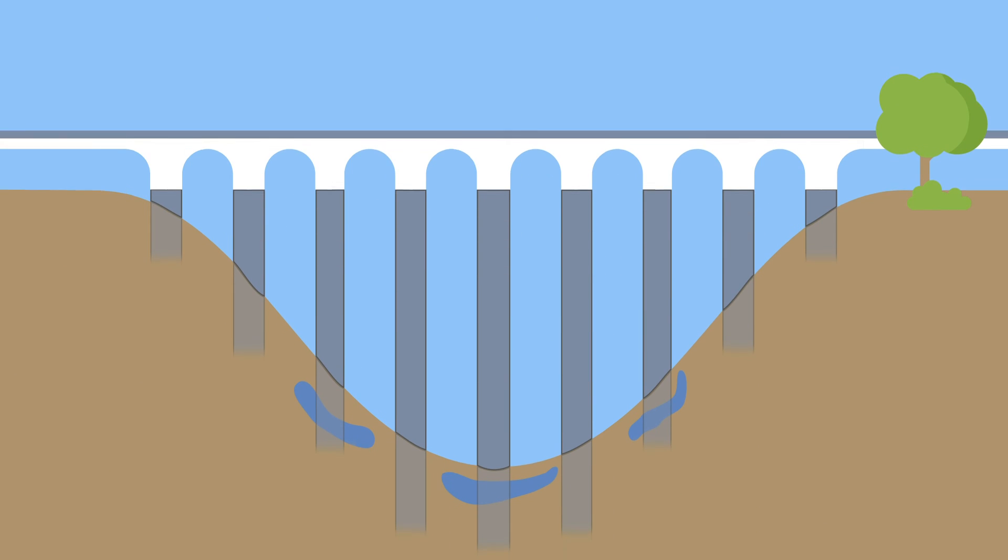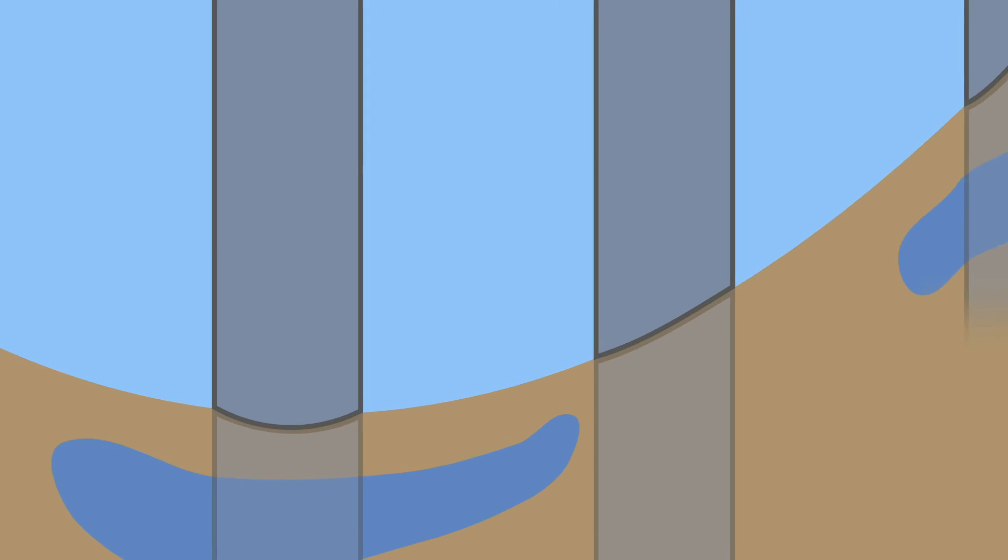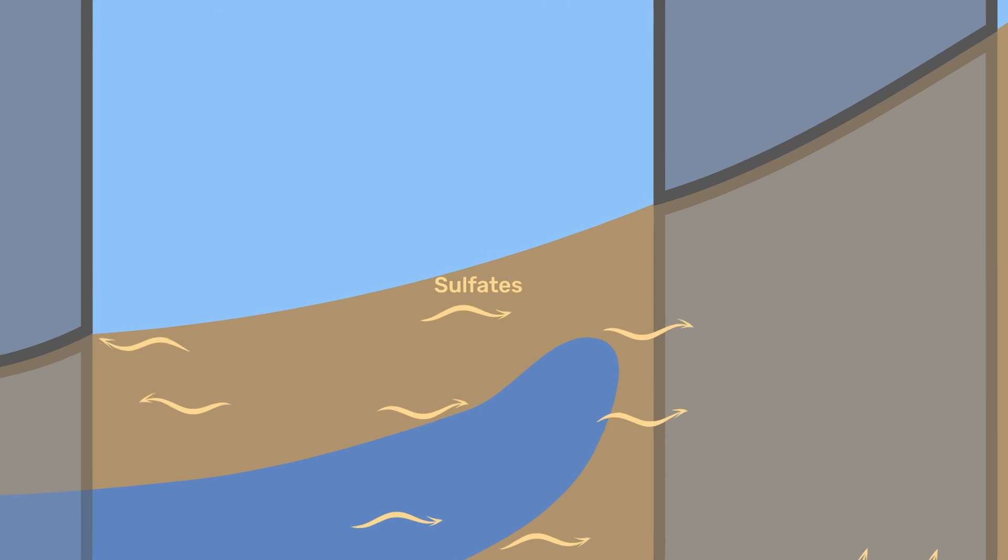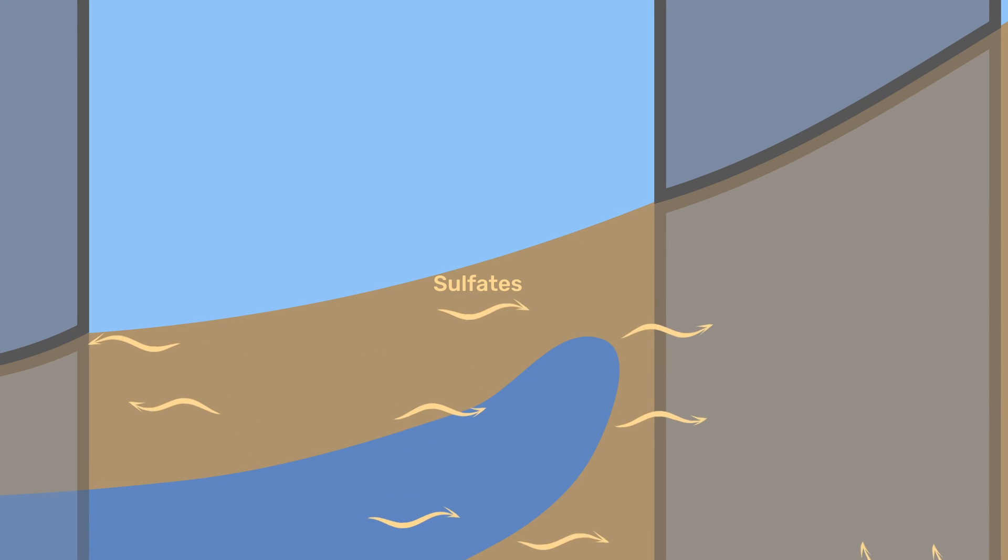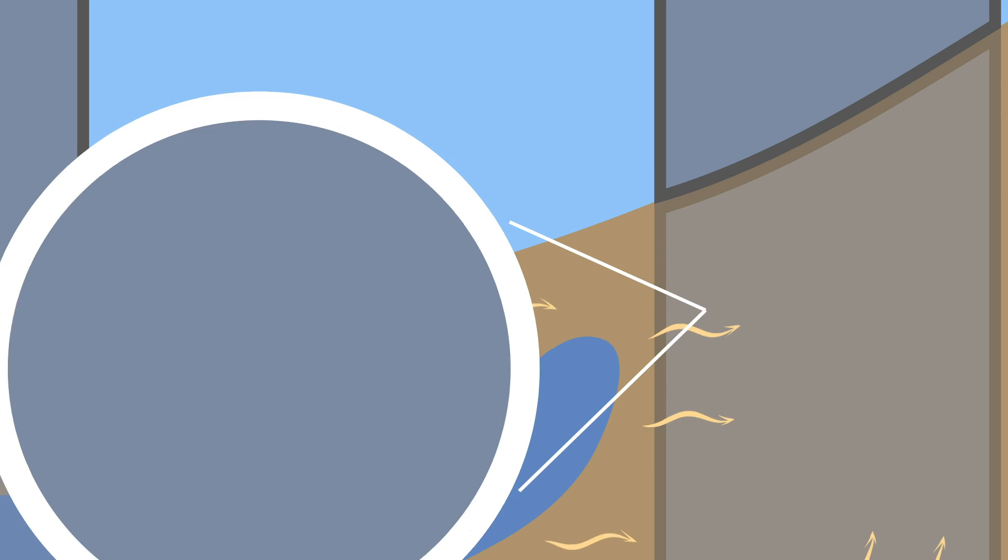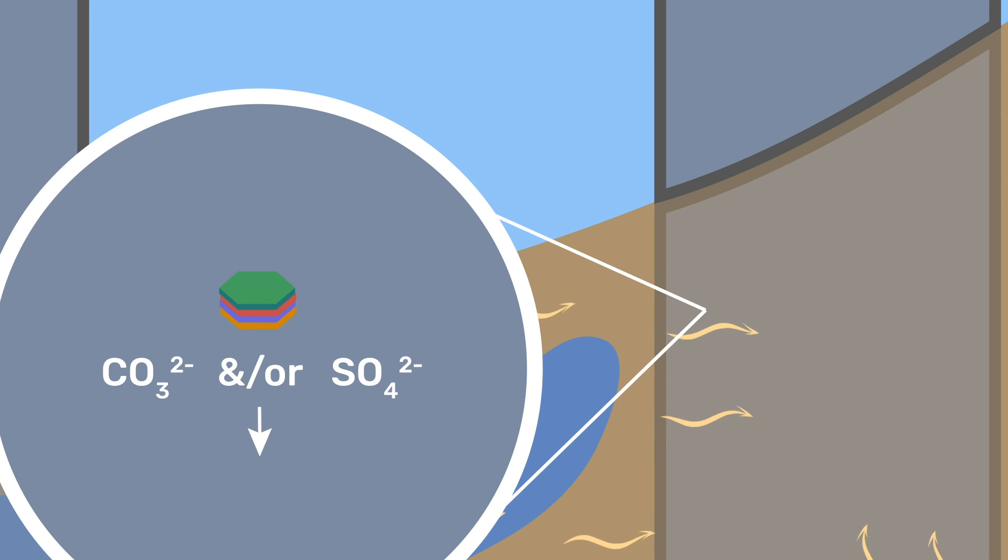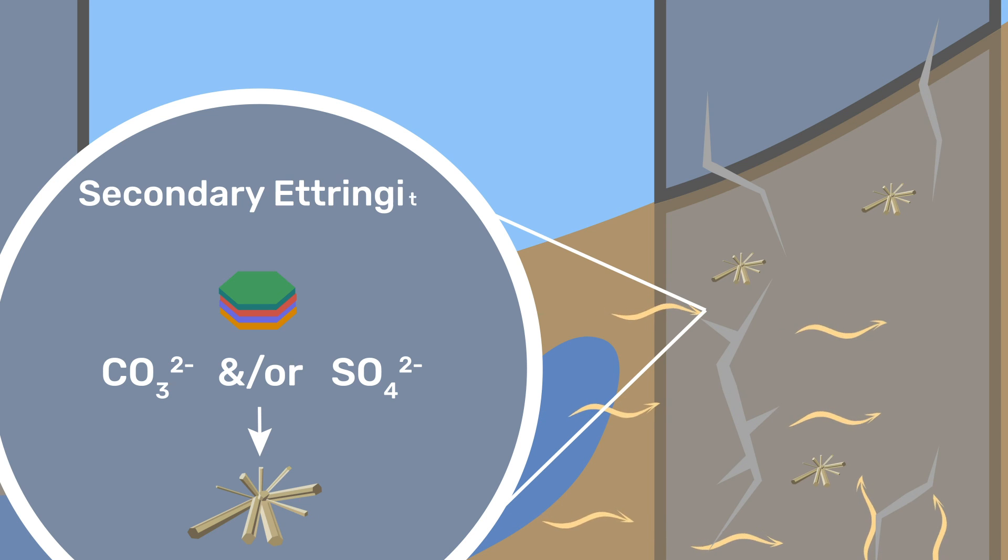If the hardened concrete is exposed to sulfates, in particular from groundwater, sulfates may enter the concrete through its porous network. These sulfates can then react with monosulphate and or monocarbonate to form ettringite, which, under some circumstances, may lead to detrimental stresses from the crystallization pressure of ettringite. Overall, this process is referred to as external sulfate attack. It is also known as secondary ettringite formation, noted SEF.